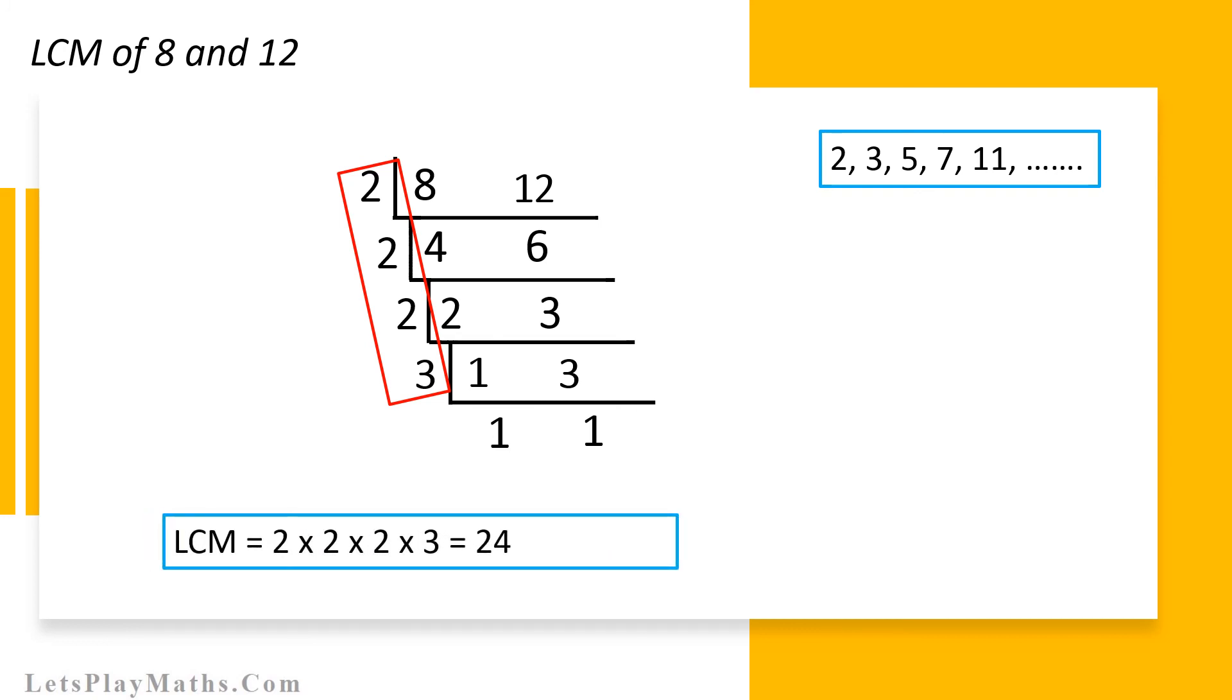If we multiply 2 by 2, again multiply by 2, again multiply by 3, the result will be 24. So, the LCM of 8 and 12 is 24.